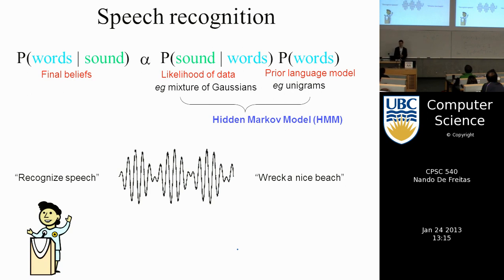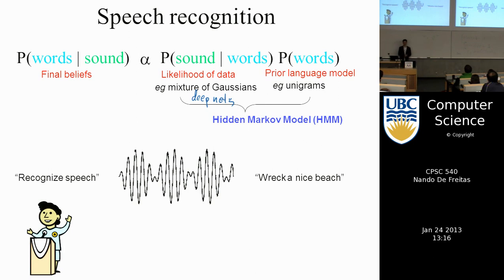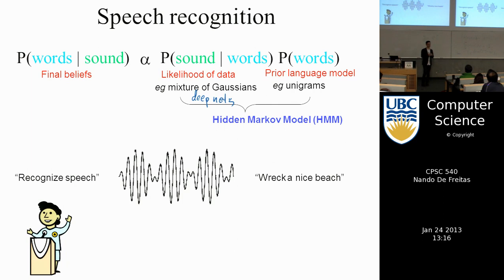This is essentially how speech recognition works: you want to infer the probability of words given the sounds you hear. We have good models to generate sounds given words — the likelihood. In the old days, we used mixtures of Gaussians as the likelihood; these days we use deep nets, which is why this course covers deep nets. For the language prior, people use simple things like bigrams — counting how often pairs of words occur in English — and that's enough to predict the next word.